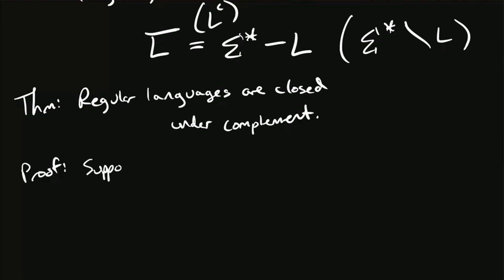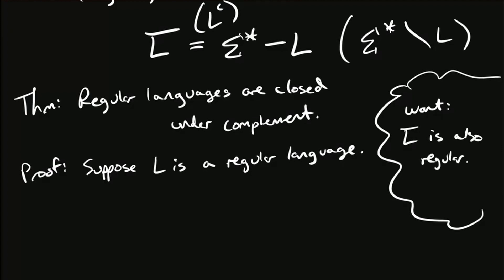Well, let's see. So suppose L is a regular language. What do we want to prove about L with regard to L? So I'm saying L is arbitrary regular language. What do I want to prove? Yeah, its complement is also regular.